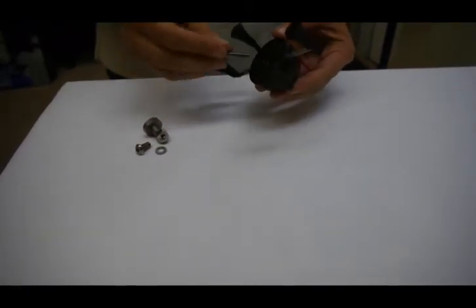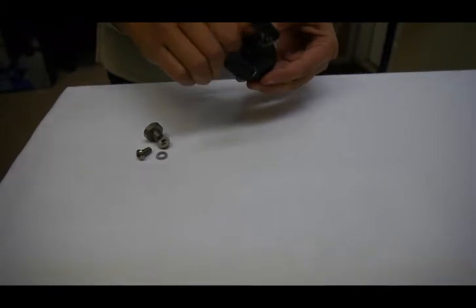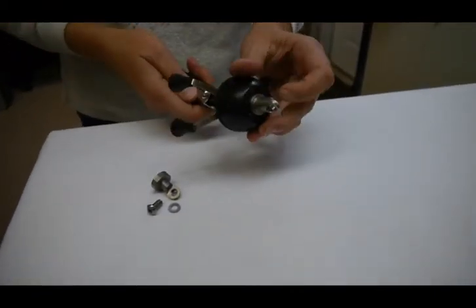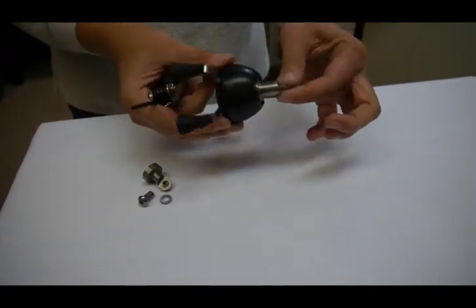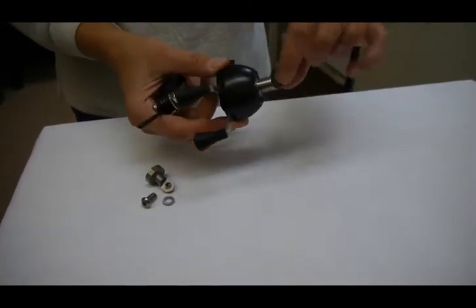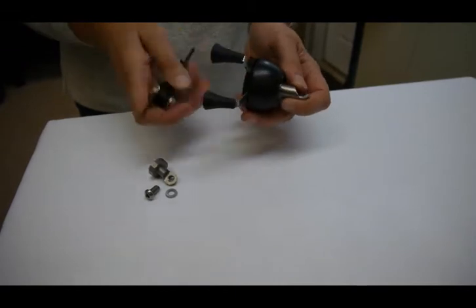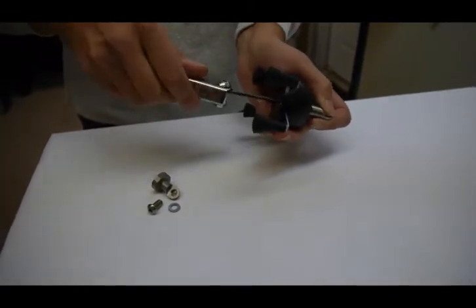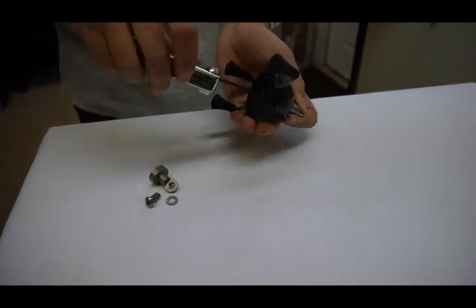You flip it over and install the screw on the other side to hold the adapter stem in, and I'll point out here that the adapter stem is completely 360 degree adjustable. So when you get it on the bike, you can always loosen that front screw, adjust the angle, and then tighten it again.